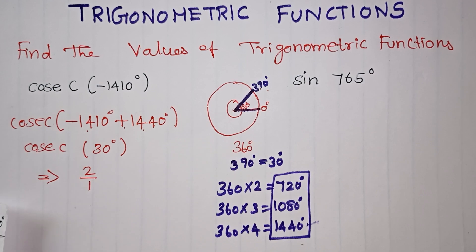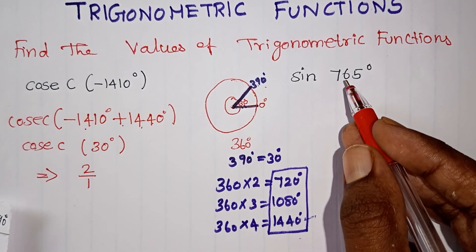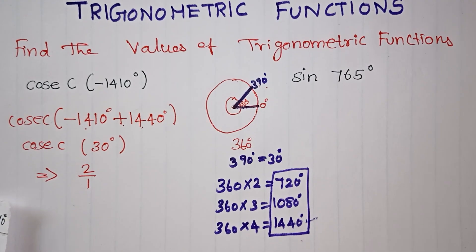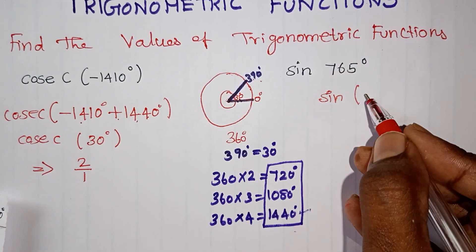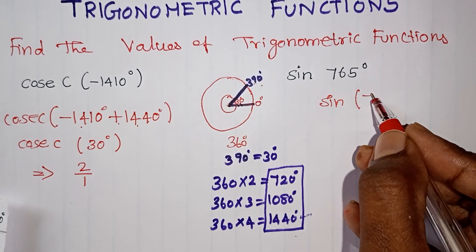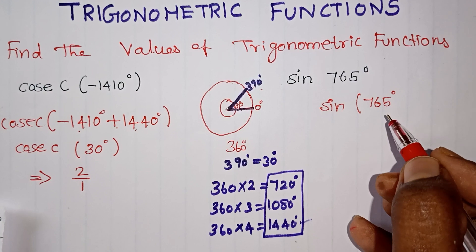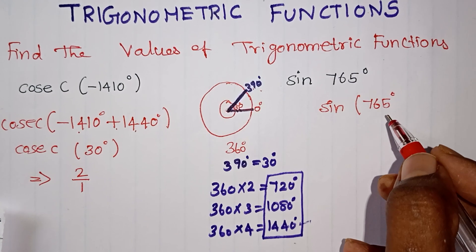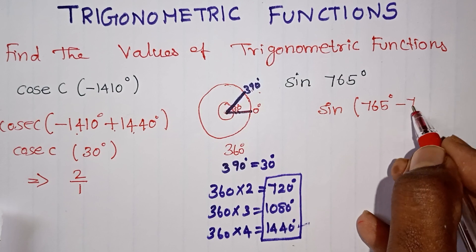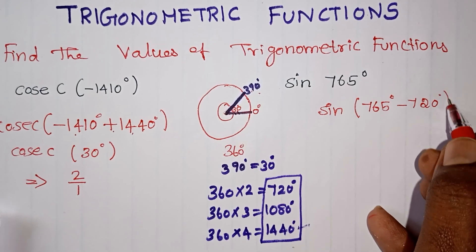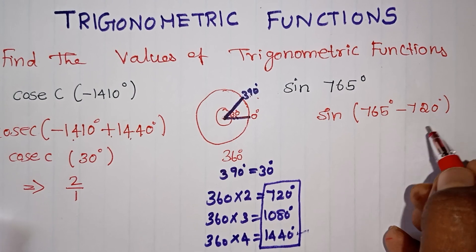Now if we ask a question: find sine of 765 degrees. 765 minus 720 is 45. So this question — sine 765 — we add or subtract a complete angle. Why do we subtract? It will be 45 degrees. Minus 720 gives one complete addition or subtraction, bringing it to 45 degrees.